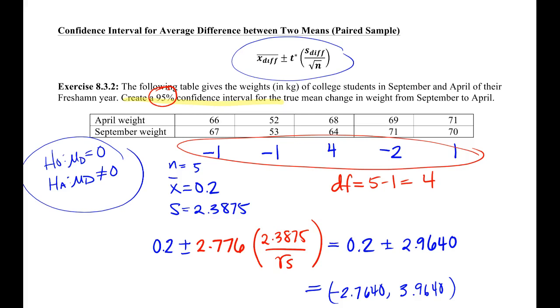So if we were thinking about the corresponding hypothesis test, we definitely could not reject the null. It is possible that you would have no difference in your weight.